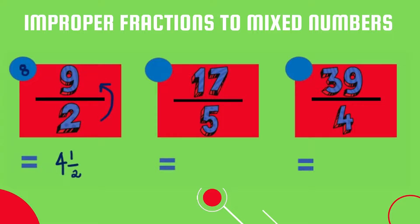Next we have 17 over 5. We ask how many fives in 17. There are three fives in 17, and three times five is equal to 15. This means we have a remainder of two, which becomes our numerator, and our denominator stays unchanged as five. 17 over 5 as an improper fraction is therefore equal to 3 and 2 over 5 as a mixed number.